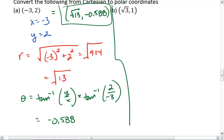Alright. Try part B on your own first and then resume the video when you're ready to see the solution. For B, I have x is root 3, y is 1. This means r is the square root of 3 plus 1, square root of 4, which is 2.